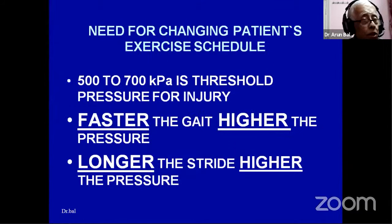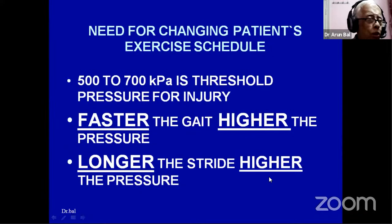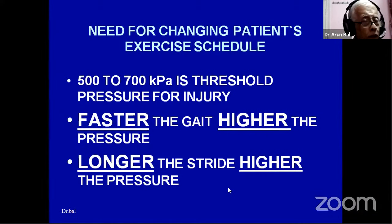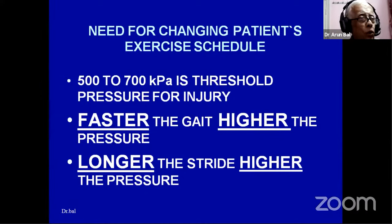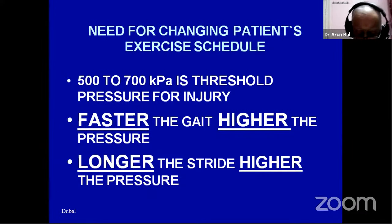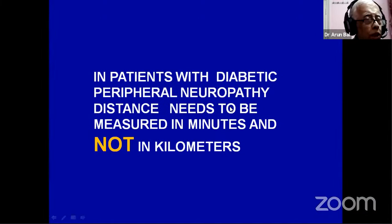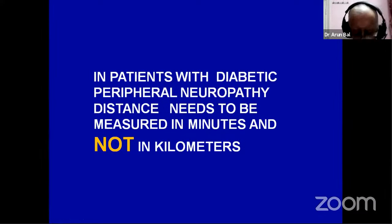The dictum to remember: faster the gait, higher the pressure; longer the stride, higher the pressure. If physicians tell diabetic patients to walk briskly nonstop for 45 minutes without checking the level of neuropathy, the forefoot pressure will cross 500 to 700 kilopascals, creating pressure anoxia, exudate formation, breakdown, and an ulcer. We should teach diabetic patients to measure distance in minutes, not kilometers — that way you can prevent forefoot ulcers.